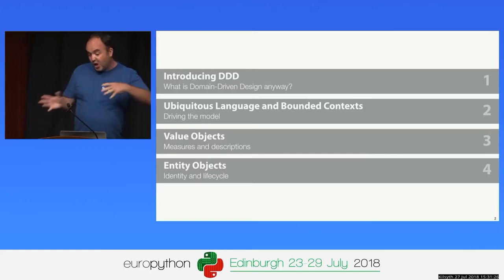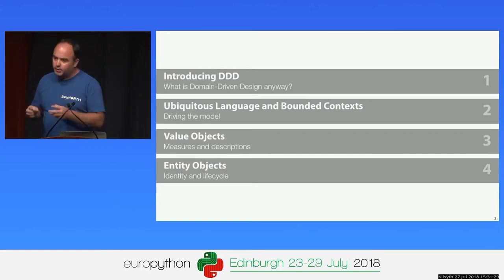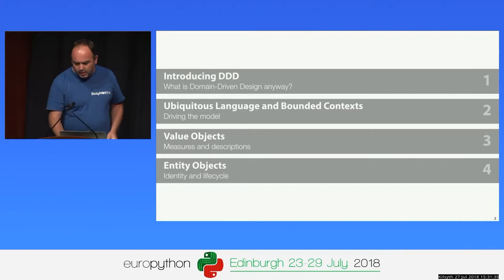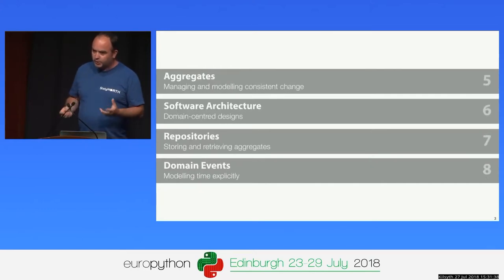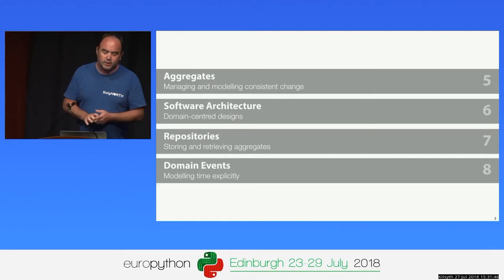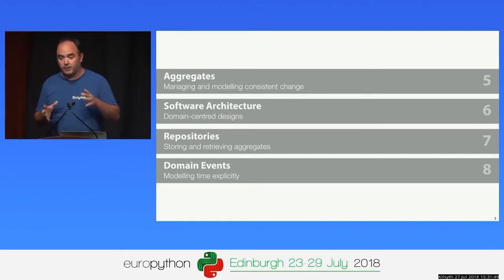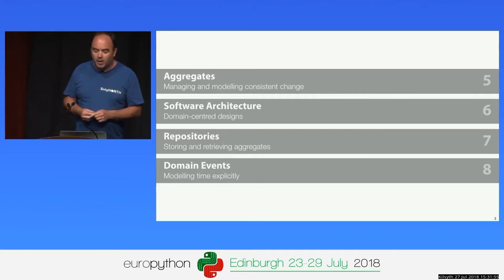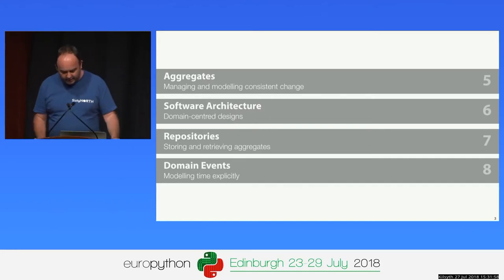Then we're going to go to the other end of the scale and talk about the smallest, simplest patterns in domain-driven design: value objects and entity objects. Then we're going to move on to aggregates, which is a topic that some people find very confusing at first when they first get into DDD. Then I'll shift gears and talk about software architecture, and if we have time, repositories and domain events.